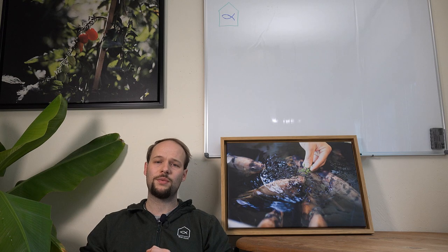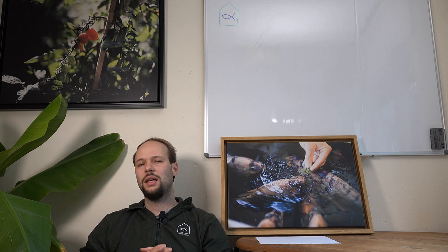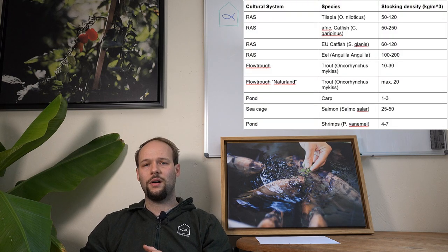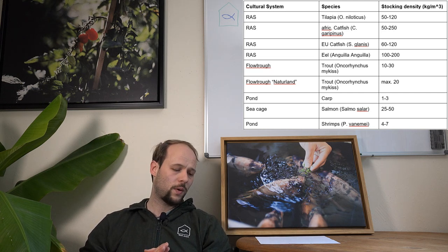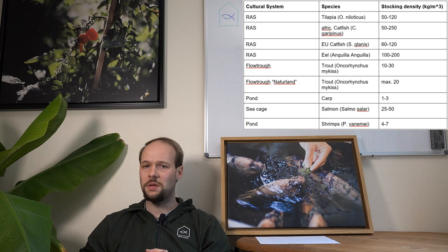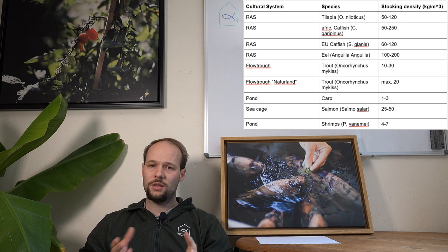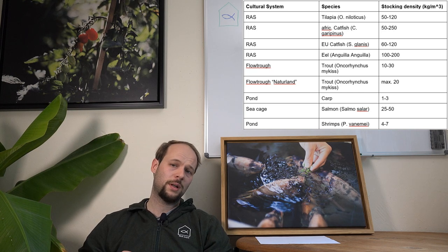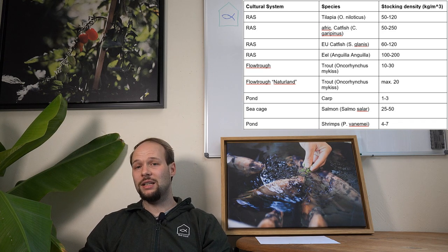So I made for you a small table with stocking densities of certain fish species. Here that is mainly applying to European fish cultures that I visited and I saw. On the left side you see the cultural system, then the fish species and the stocking density given in kg per cubic meter. And the first one is the tilapia of a recirculation system. Here you can see many times stocking densities between 50 and 120 kg per cubic meter. The second one is the African catfish that I mentioned earlier already, and here stocking densities are many times between 50 and 250 kg. Though there are also studies where they went up to even 600 kg per cubic meter. And then you literally have more fish than water in your tank.